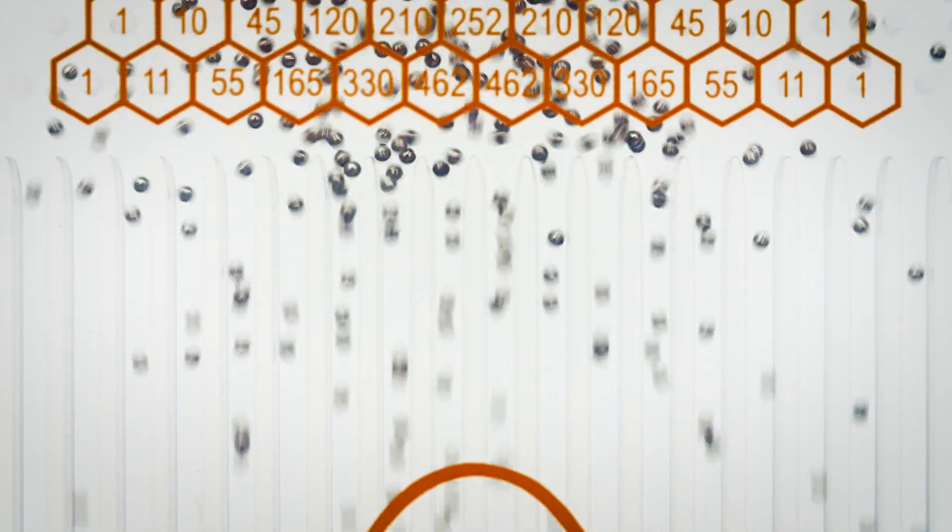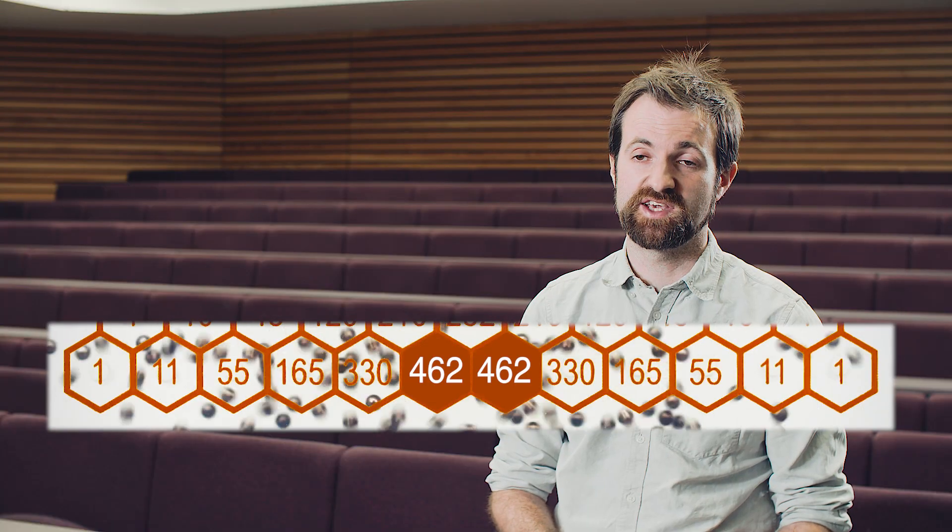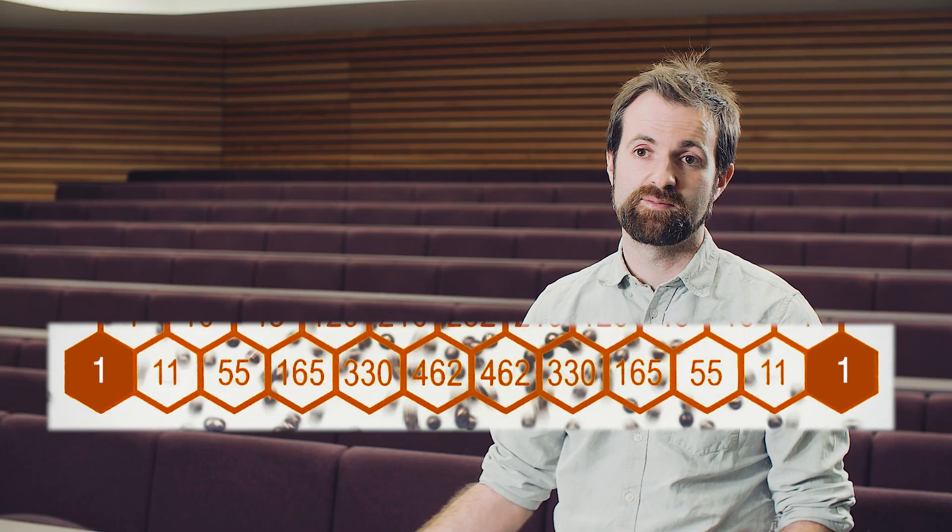There's so many combinations. When you've got twelve rows of pegs, to get to the middle two bins, there's actually 462 different paths you can take to get through there compared to the single path you can take to get to the extreme outside bins.